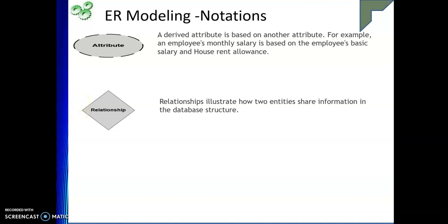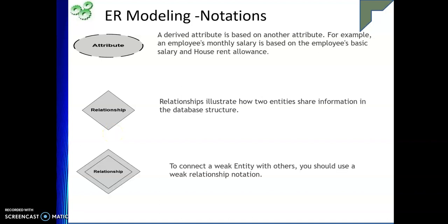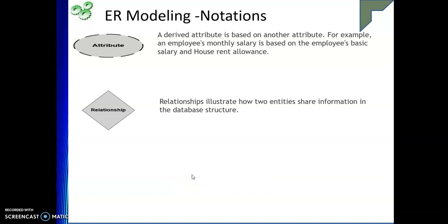Next, the relationship between two entities is represented by a diamond shape. We will discuss cardinality and degree of relationship in more detail in the upcoming session. If a relationship exists with a weak entity, then that relationship is represented by a double rhombus symbol. So the double rhombus is used to represent a relationship involving a weak entity.